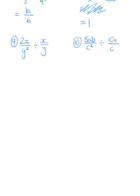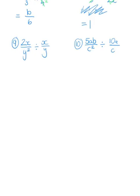And lastly, we've got question 9 and question 10. Question 9, once again dividing fractions. So the very first thing we're going to do is change it into something we like — we don't like dividing, so we're going to change it into multiplying. Let's do some magic with getting rid of the x's. We can also cancel the y with y squared, and that gives me an answer of 2 over y.